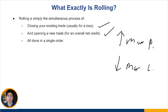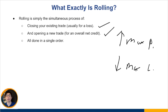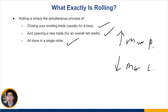Basically what you need to understand is that rolling comprises just two parts: closing your existing trade and then opening a new trade to sell another credit spread. You want to do all this in a single order ticket. This is very important because if you do not do this in a single order ticket, you will have what is called lagging risk.